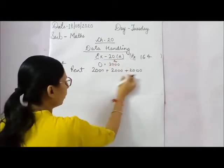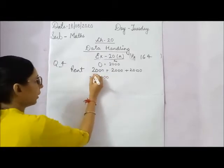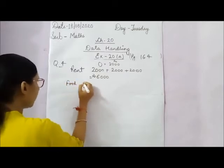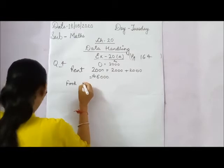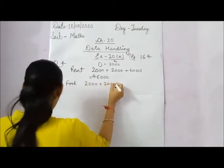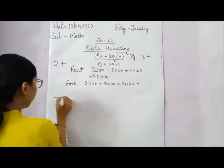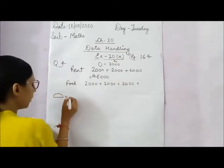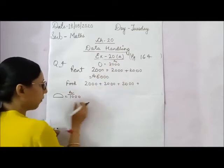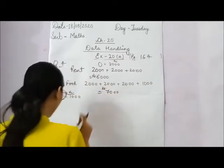So we add two thousand three times and get six thousand for rent. On food, they are spending two thousand plus two thousand plus two thousand, and there is also one half picture. The half picture shows one thousand rupees — that is half of two thousand. So adding one thousand gives seven thousand rupees for food.